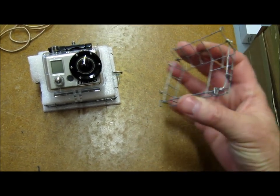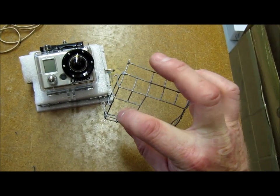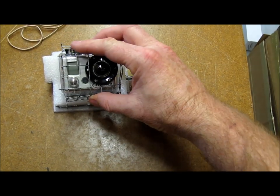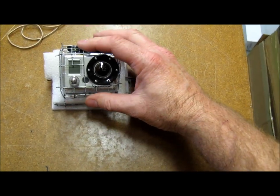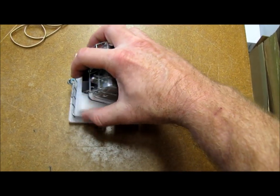Now the front plate is also just a piece of wire mesh that I cut out in the places where the control buttons are. It fits over the camera like that and is then secured with elastic bands to the rest of the camera mount.